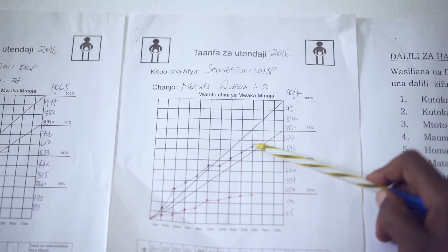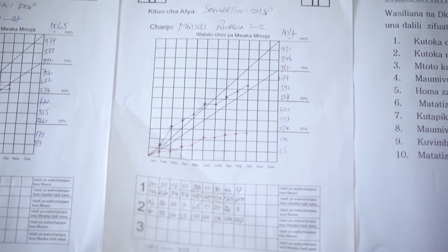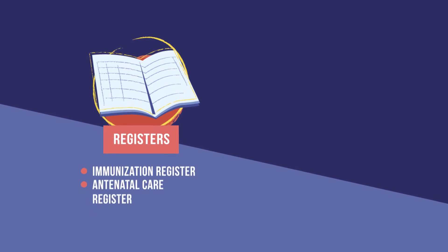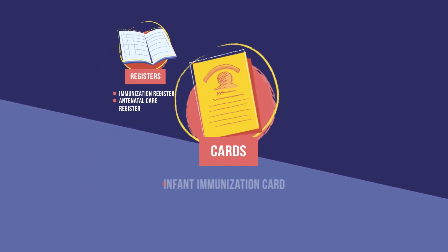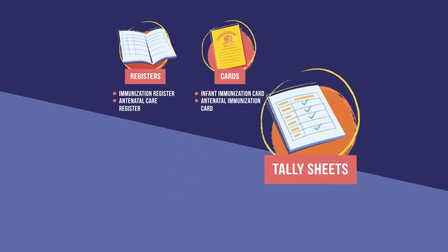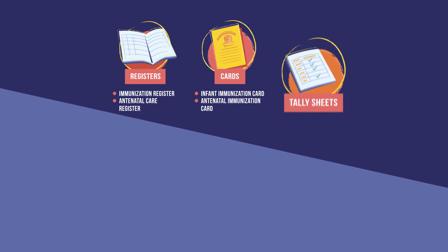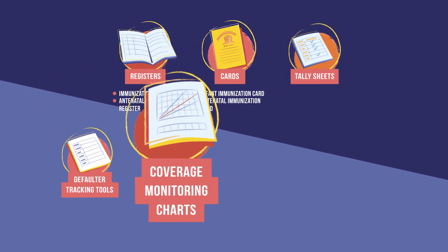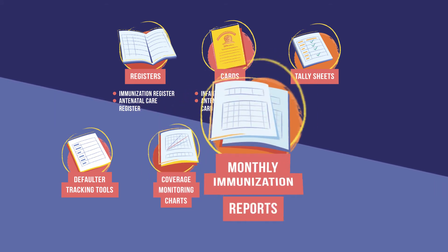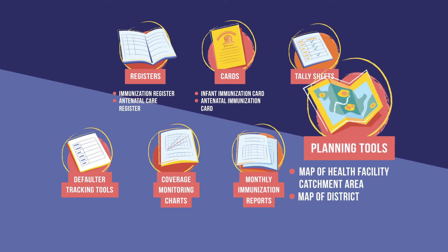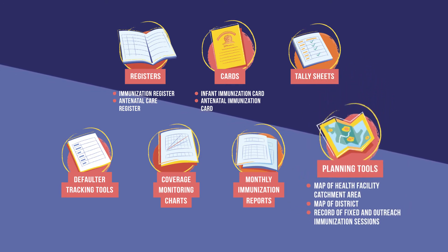These are the tools that help health facility workers understand how well they are delivering vaccines: registers, such as immunization registers or antenatal care registers; cards for tracking infant immunizations and antenatal immunizations; tally sheets; default tracking tools; coverage monitoring charts; monthly immunization reports; and planning tools such as maps and records of fixed and outreach immunization sessions.